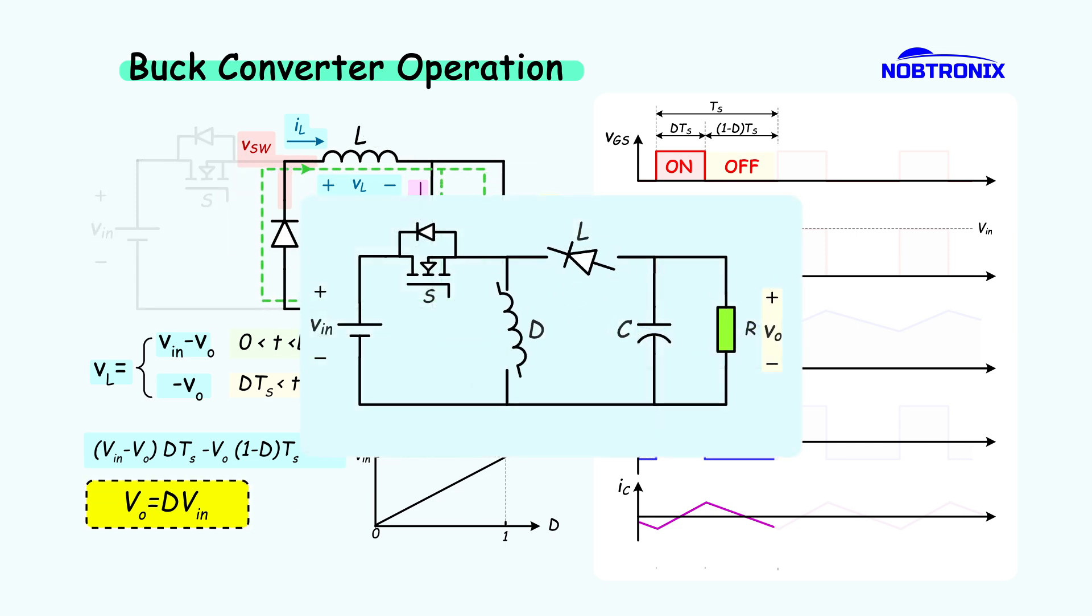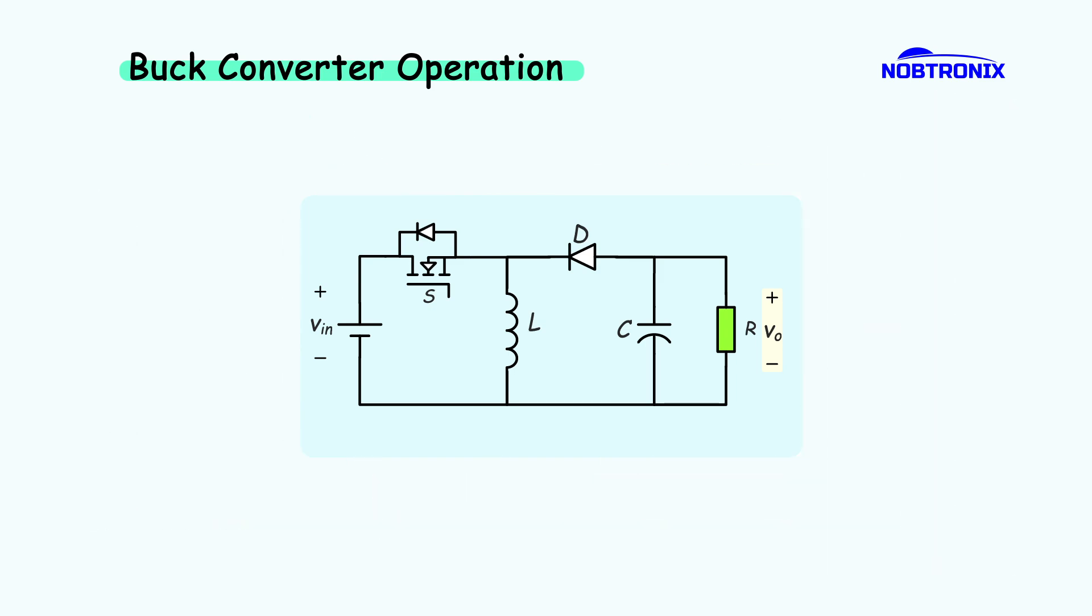Now if we swap the position of the inductor and diode, we get a different circuit. We'll need to do a fresh analysis, because the buck converter rules don't apply here.